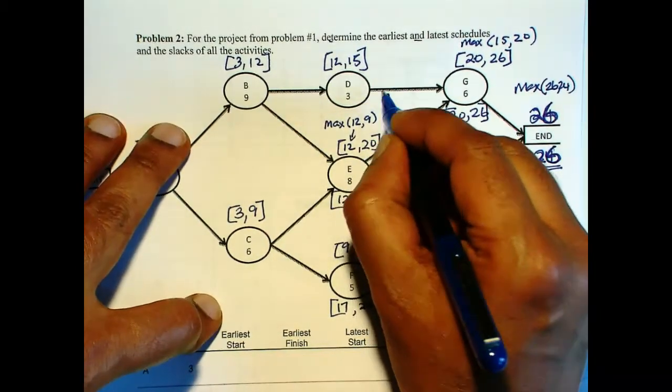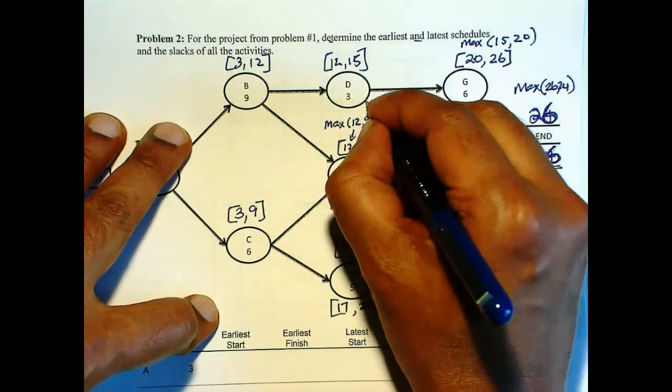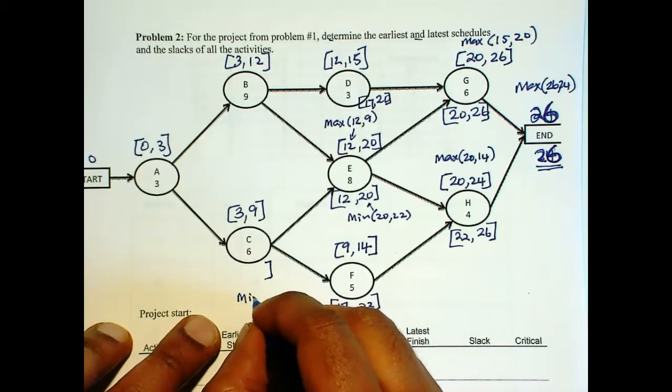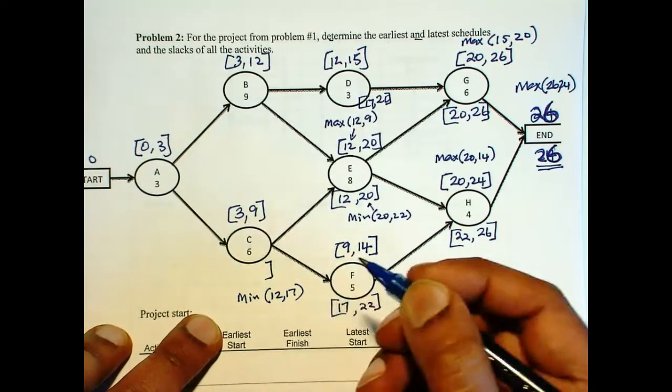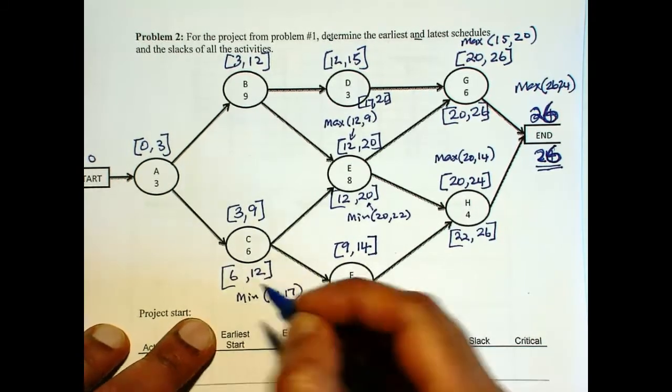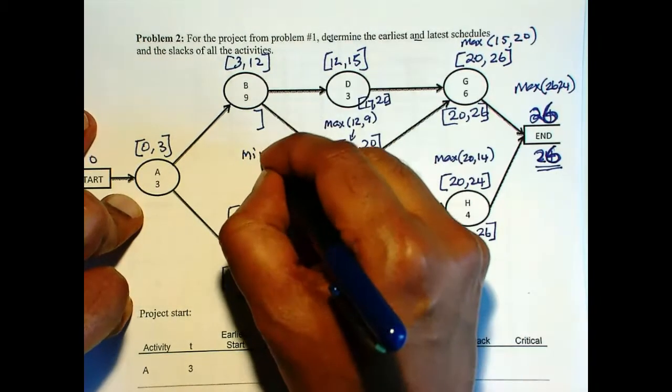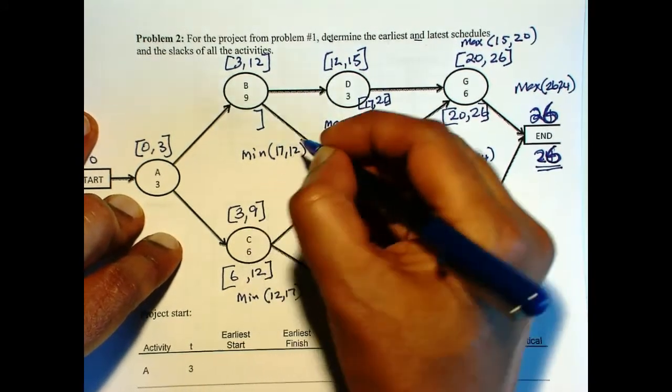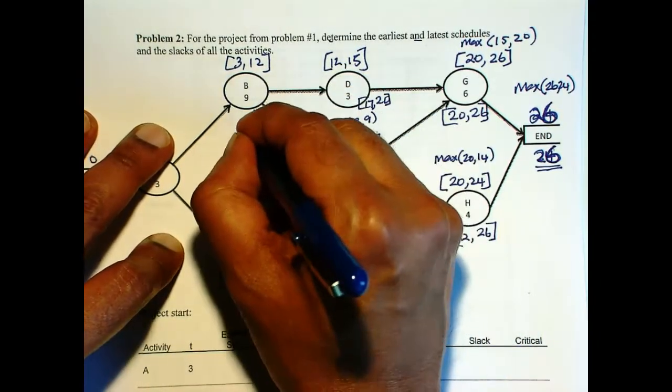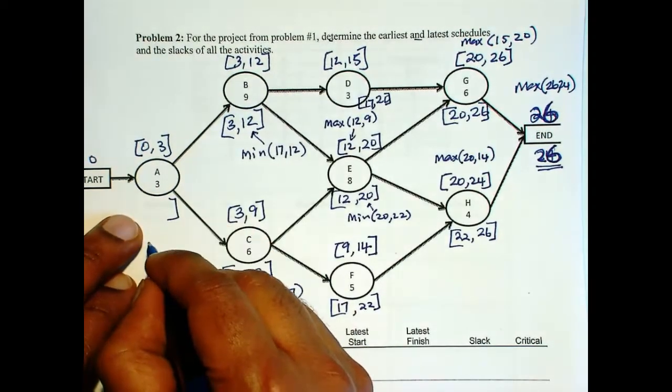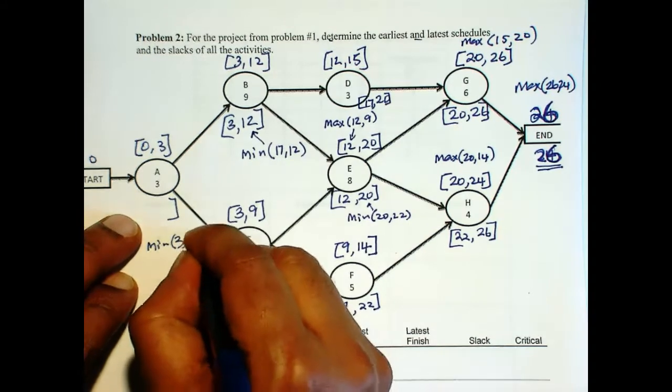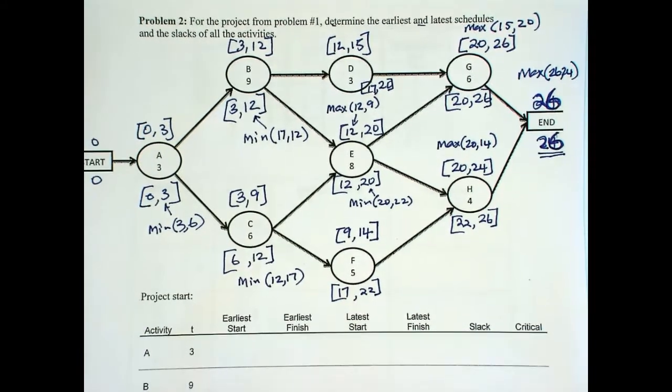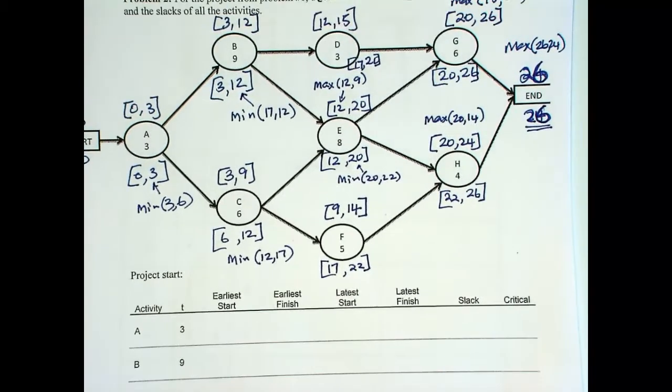Here, only one arrow. So 20 minus 3 is 17. Here, there are two arrows. So you have to go min of 12 and 17. So that's 12 minus 6. And here also, there are two arrows, min of 17 and 12. So you get 12 and 3. And here, we have, again, two arrows going out, min between 3 and 6. So we are back to 0. And that's important.